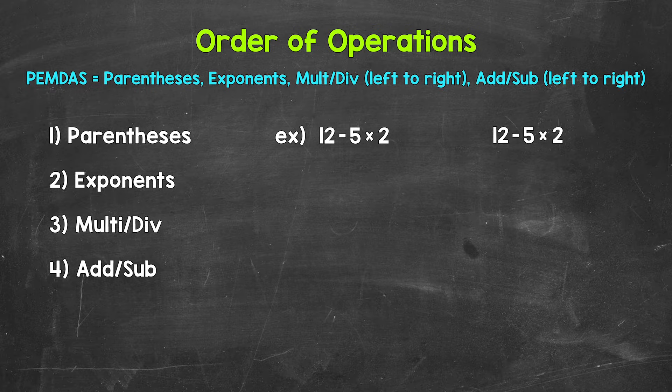Let's take a look at an example to show why this is important. We have 12 minus 5 times 2. Let's work through this two different ways. We will start by forgetting about the order of operations. Let's say that a person works from left to right, starting with 12 minus 5. So what's this going to look like?